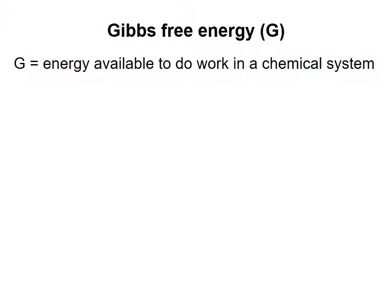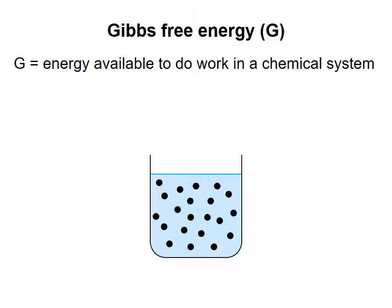We can start with the concept of Gibbs free energy, or G. A rigorous definition of Gibbs free energy is not necessary to understand the concepts we teach in this course. You can think of the Gibbs free energy as the amount of energy available to do work in a chemical system. By a chemical system, I simply mean a collection of molecules existing at a particular place under particular environmental conditions. In this course, we can think of a chemical system as consisting of particular types of molecules dissolved at some concentration in an aqueous solution.